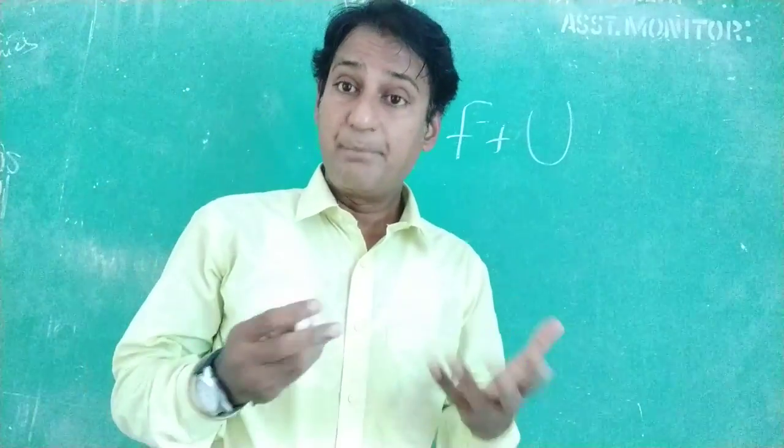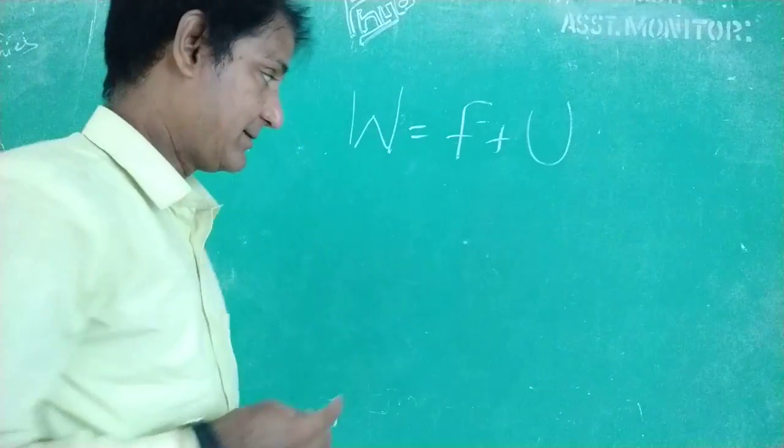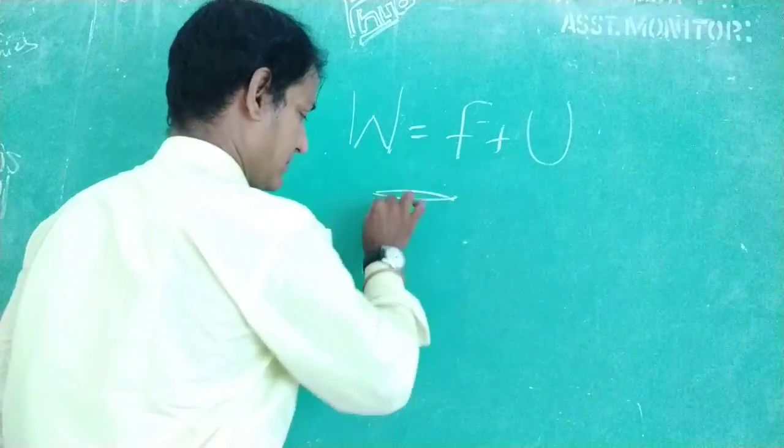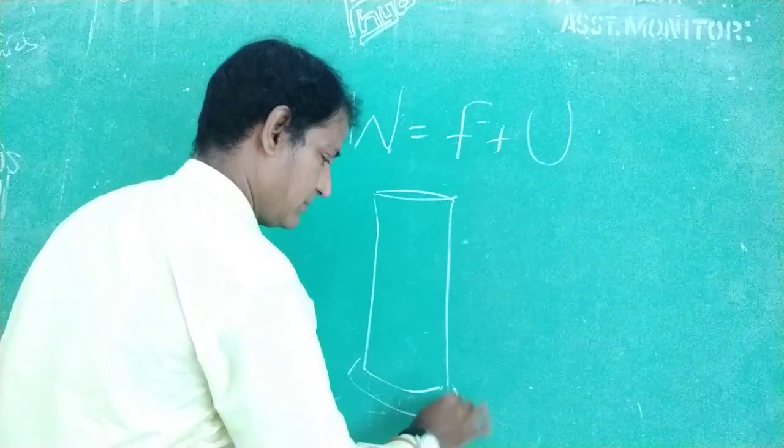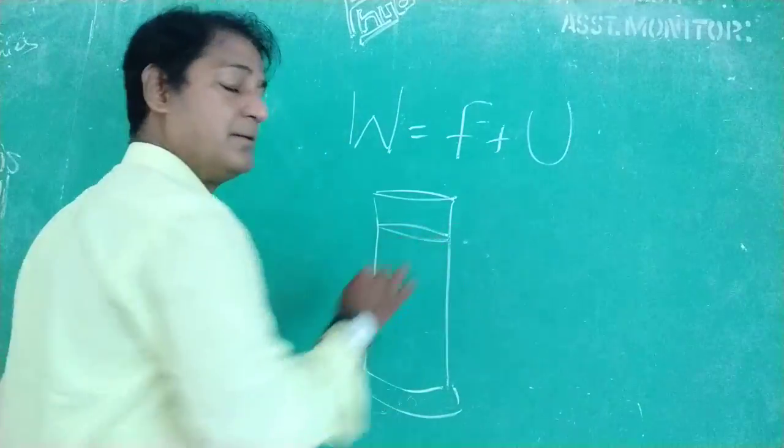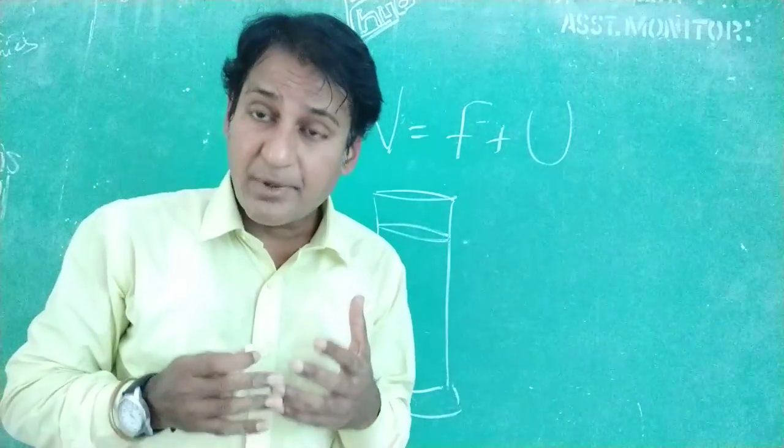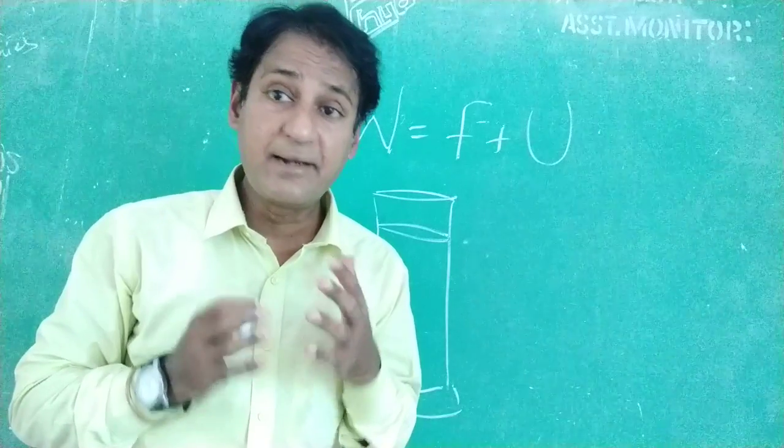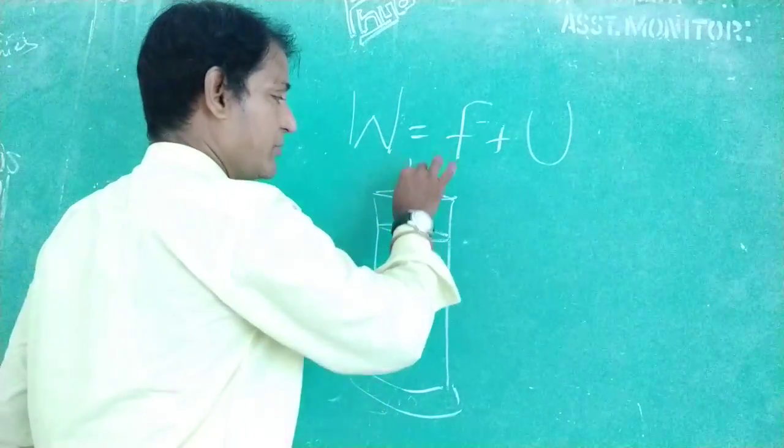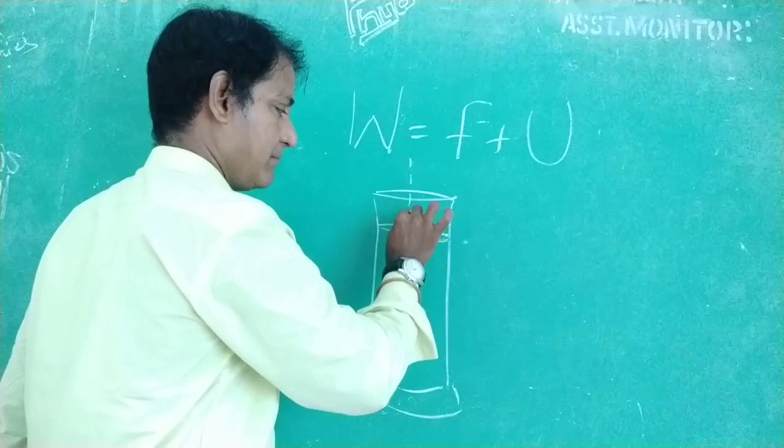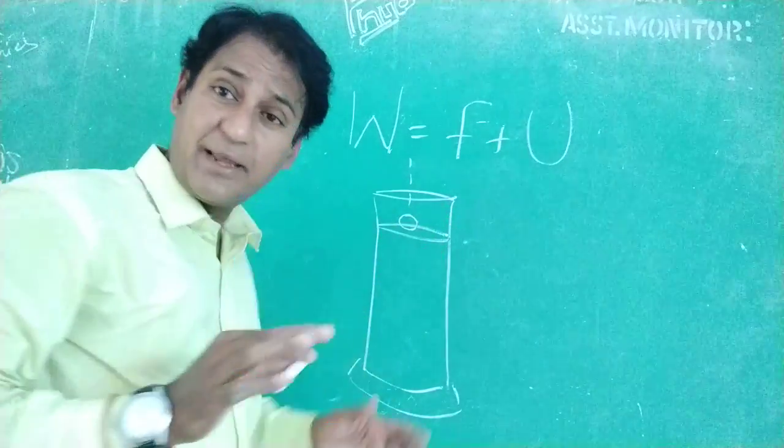Take a beaker, a long beaker, a jar like that. Pour some highly viscous liquid like glycerin into it, up to this level. Now I am going to drop a small spherical metal ball.